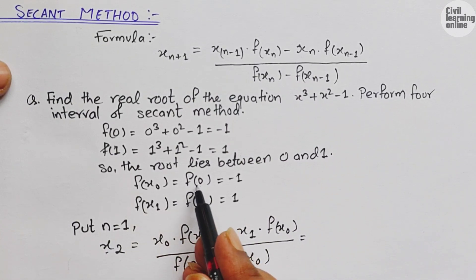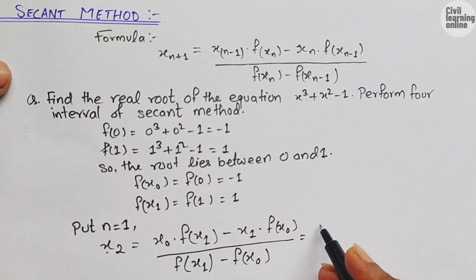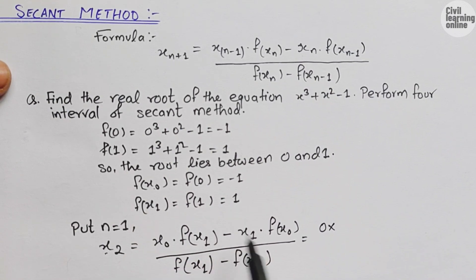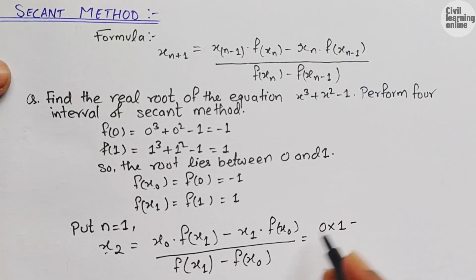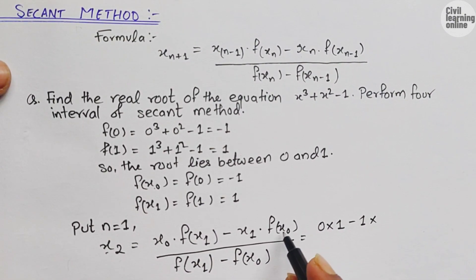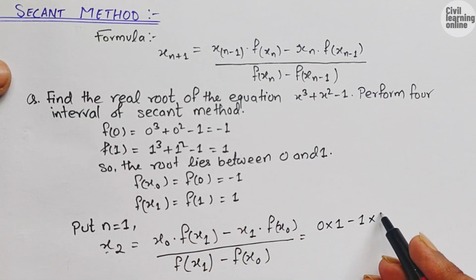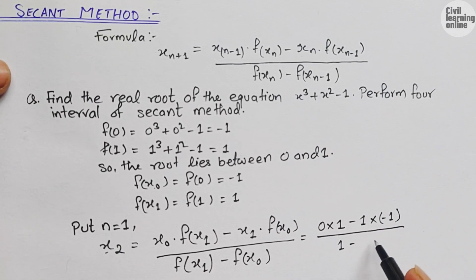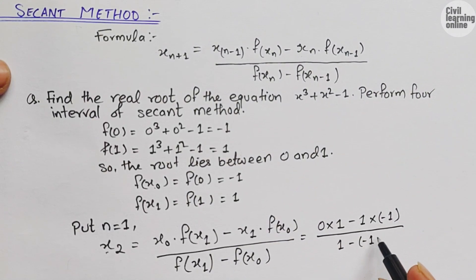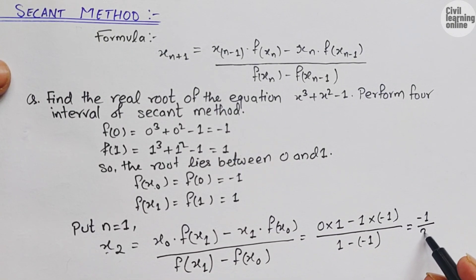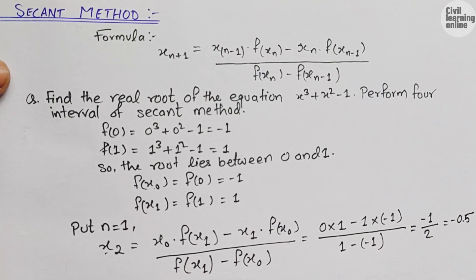Now put in the values: x₀ = 0, f(x₁) = 1, x₁ = 1, f(x₀) = -1. So the numerator is 0 × 1 minus 1 × (-1) = 0 - (-1) = 1. The denominator is f(x₁) - f(x₀) = 1 - (-1) = 2. So x₂ = -1 / 2... wait, that gives 0 minus 1 upon 2, which equals -0.5.